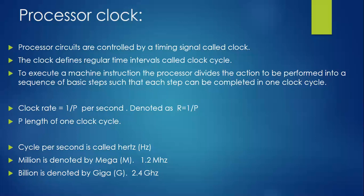When we check the specification of our system, there will be something mentioned like 2.4 gigahertz or 3.5 gigahertz. For example, 2.4 gigahertz means 2.4 billion clock cycles can be executed within one second. As a small assignment, third semester CSE students should find the specification of their own system and note the processor speed, such as 2.4 GHz, 3.5 GHz, or 3.6 GHz.